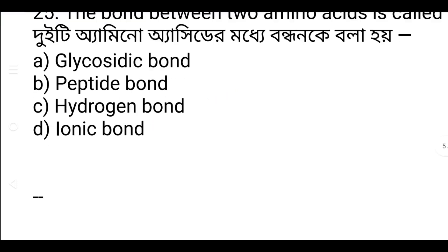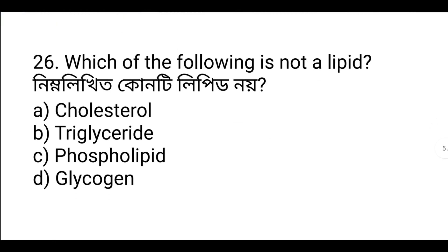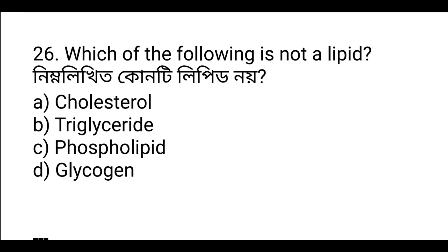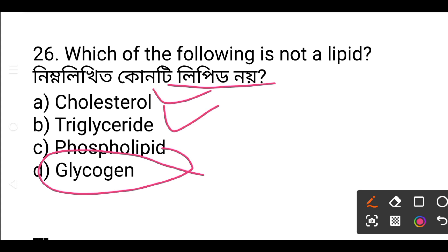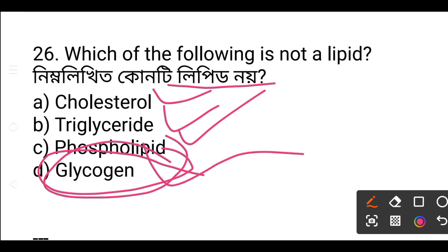Which of the following is not a lipid? The answer is glycogen. Glycogen is not a lipid — it is a polysaccharide, a carbohydrate. Cholesterol, triglyceride, and phospholipid are lipids, but glycogen is a polysaccharide — option C.